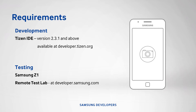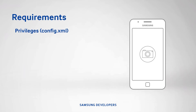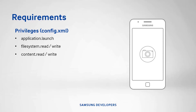For privileges in config.xml, you'll need a few of them. Application.launch, since the app will be calling for the system's image viewer. Filesystem.read and write, as it will be having input and output operations. Content.read and write, because it will need to read and write media content information. Lastly, media capture, as this will allow access to the device's camera stream.